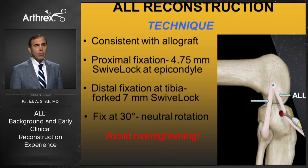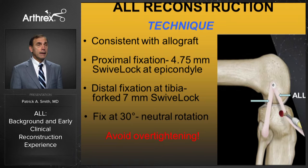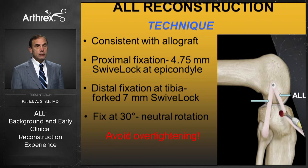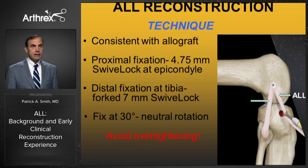My technique: I used allograft consistently. Fixation proximally — just anterior and distal to the epicondyle — was with a 4.75 millimeter biocomposite swivel lock anchor. Distally I used a forked 7 millimeter swivel lock, fixed at 30 degrees of flexion in neutral rotation. It is critical not to over-tighten the ALL — I fix at 30 degrees, confirm full motion on the table, and check isometry before making the tibial socket. You do not want to over-constrain the joint and promote OA, which was a problem with some older extra-articular IT band tenodesis procedures.